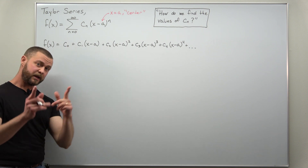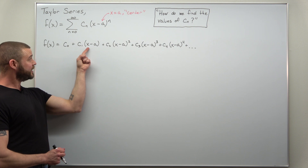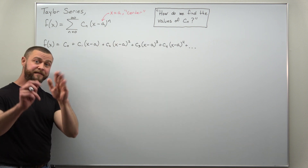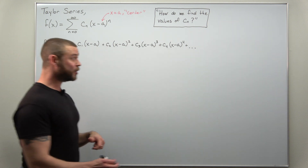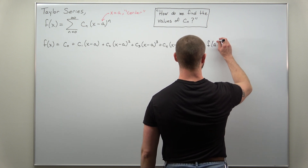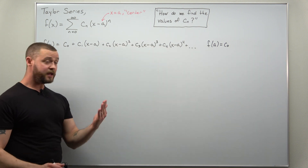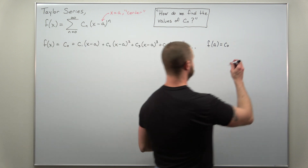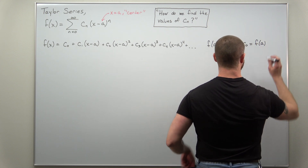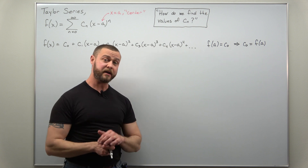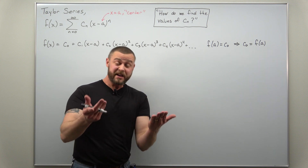We start by observing that if we plug in x equal to a, everything from the second term onward evaluates to 0. So plugging in x equal to a, we get f of a on the left side, and the only remaining term on the right side is c sub 0. So c sub 0 equals f of a — our function evaluated at the center point. That's one coefficient down, with an infinite number more to go.